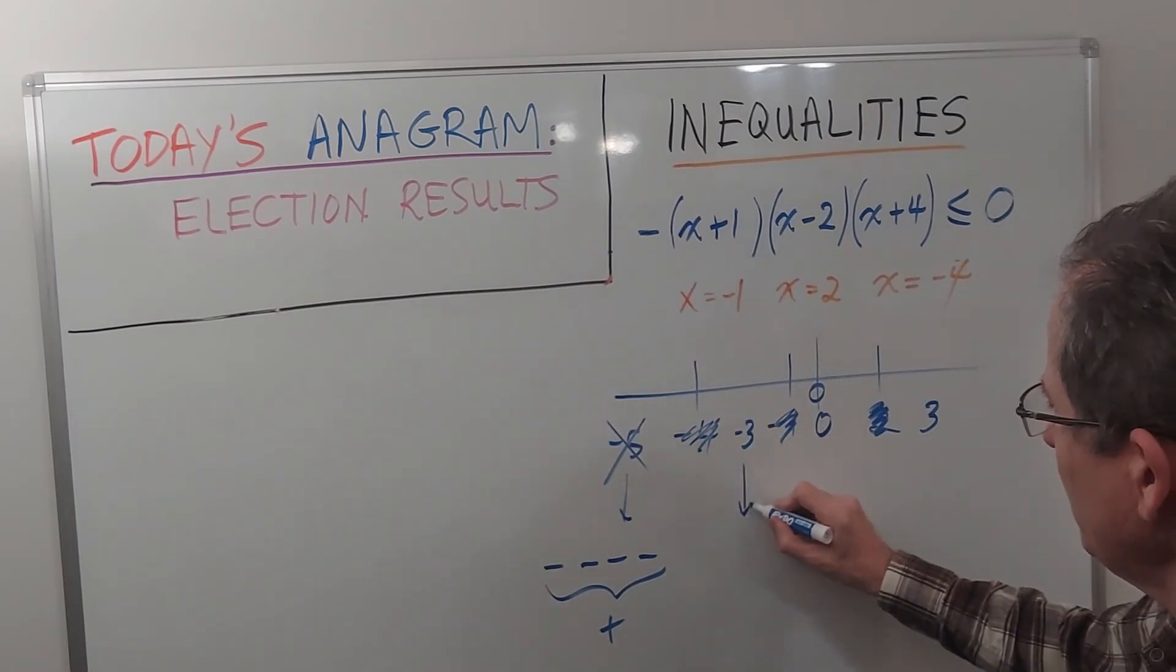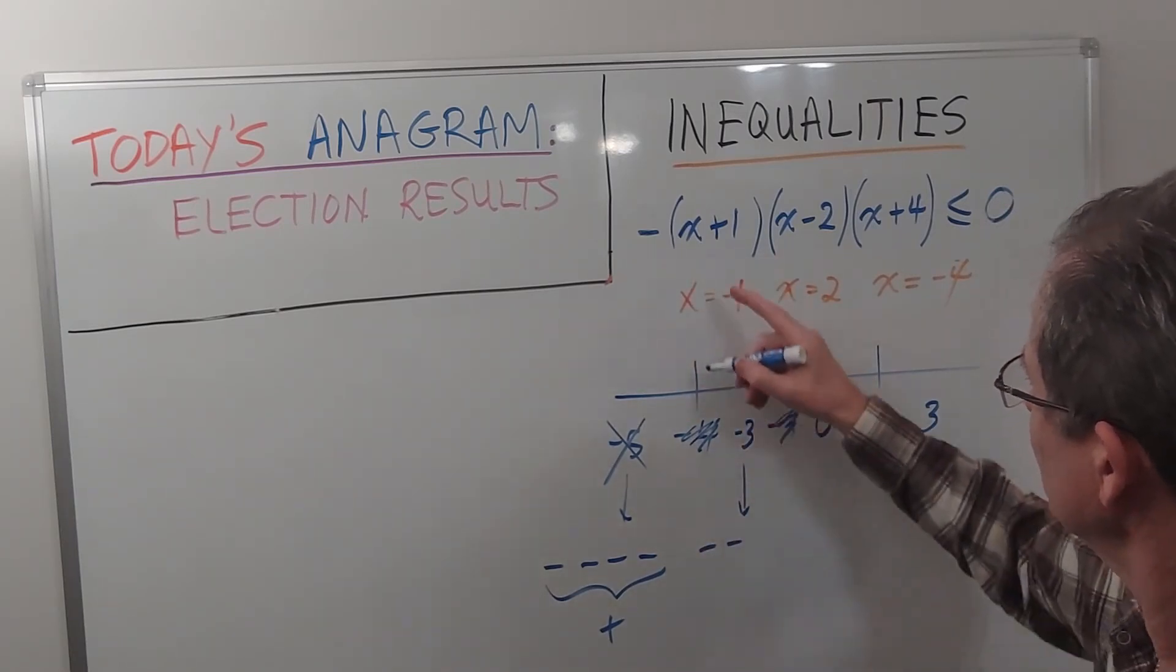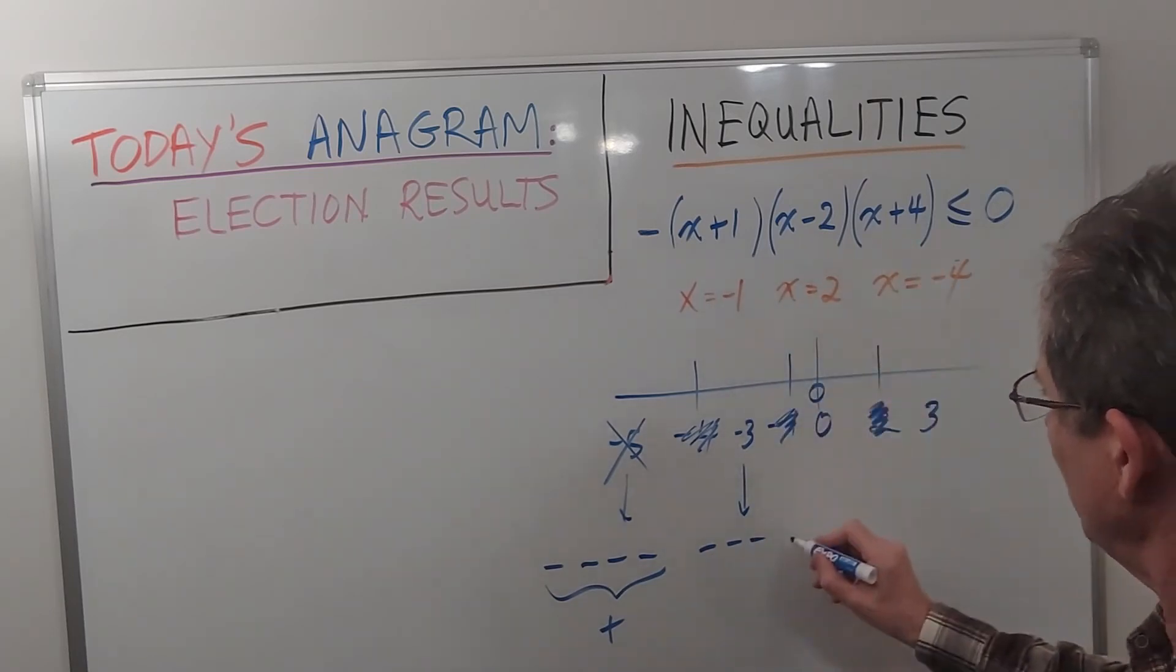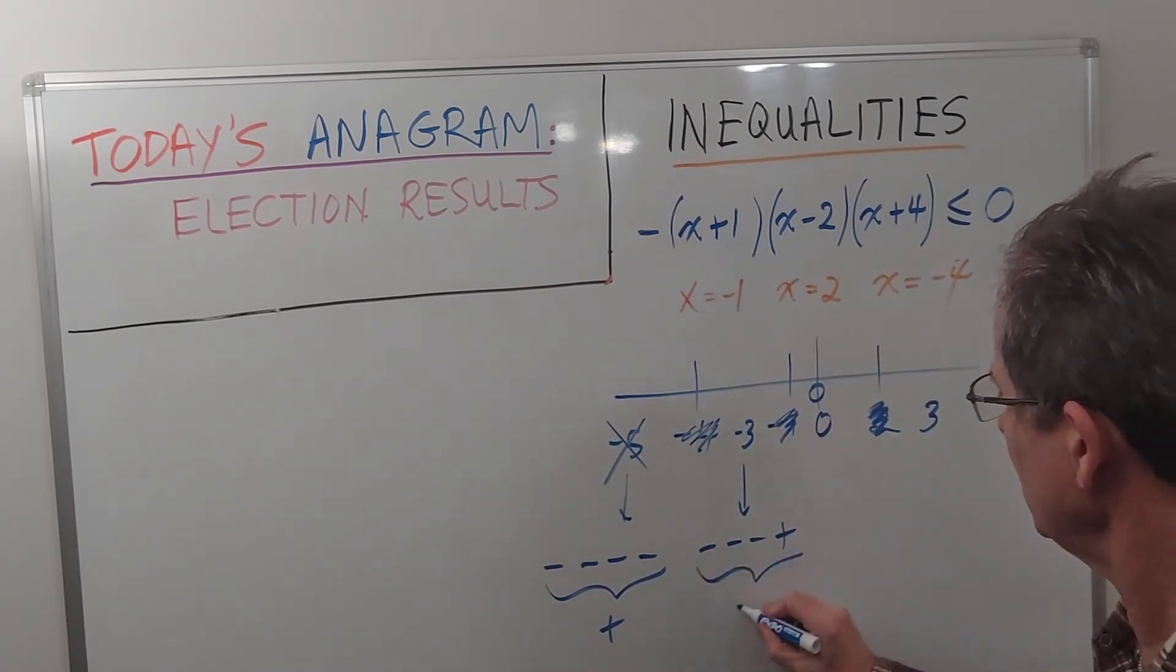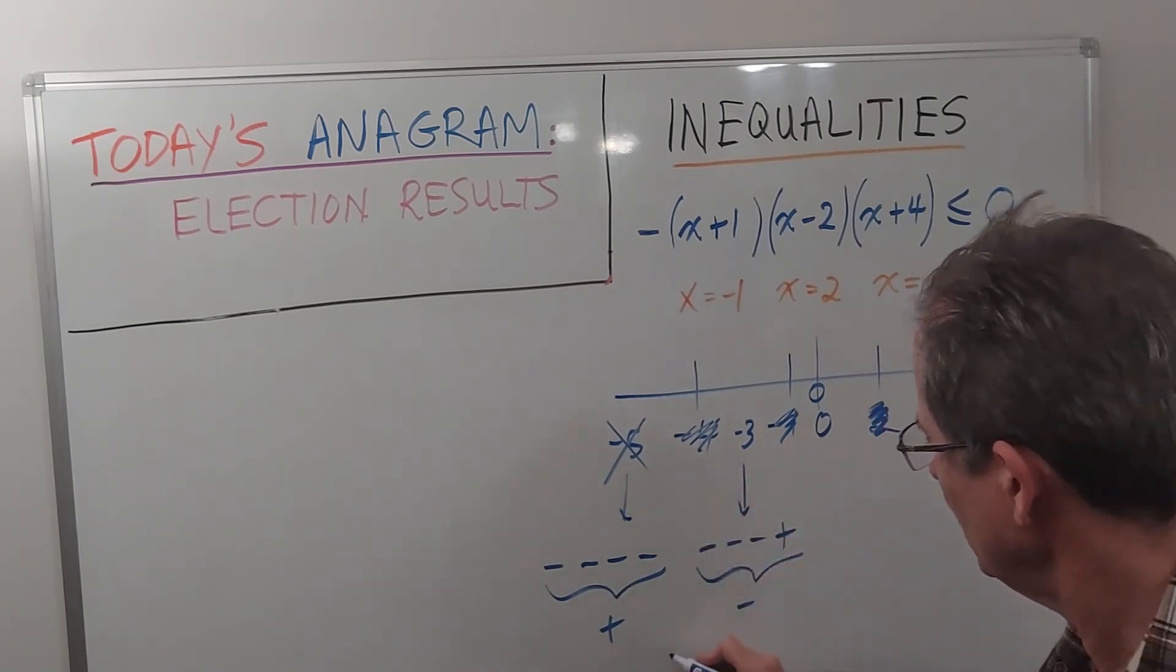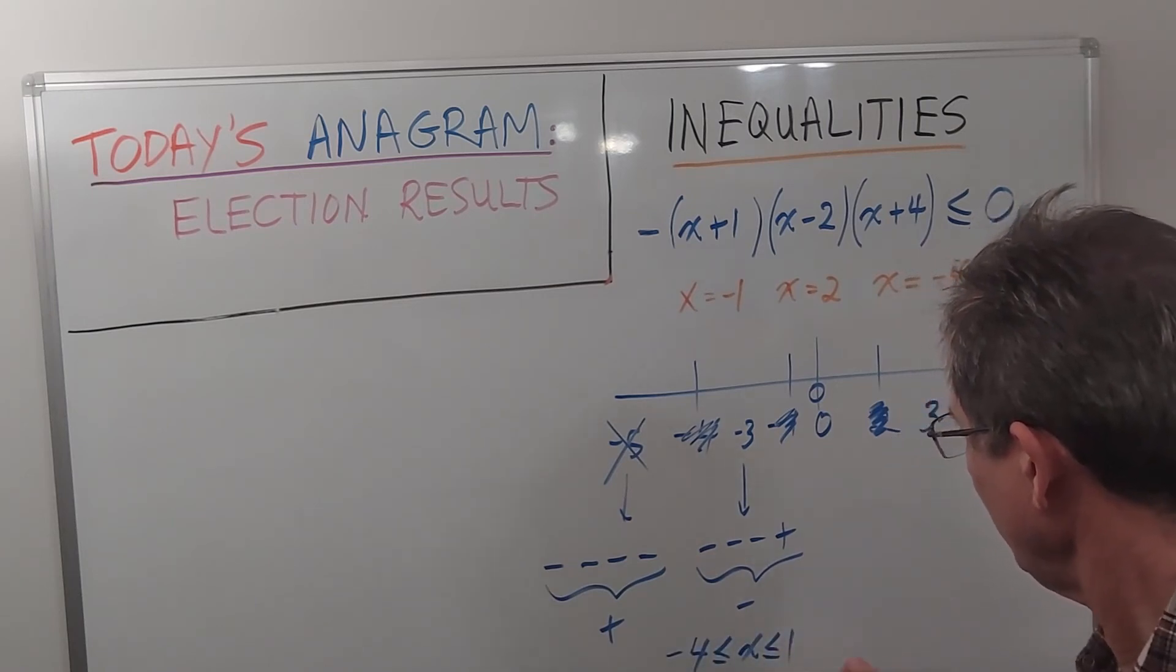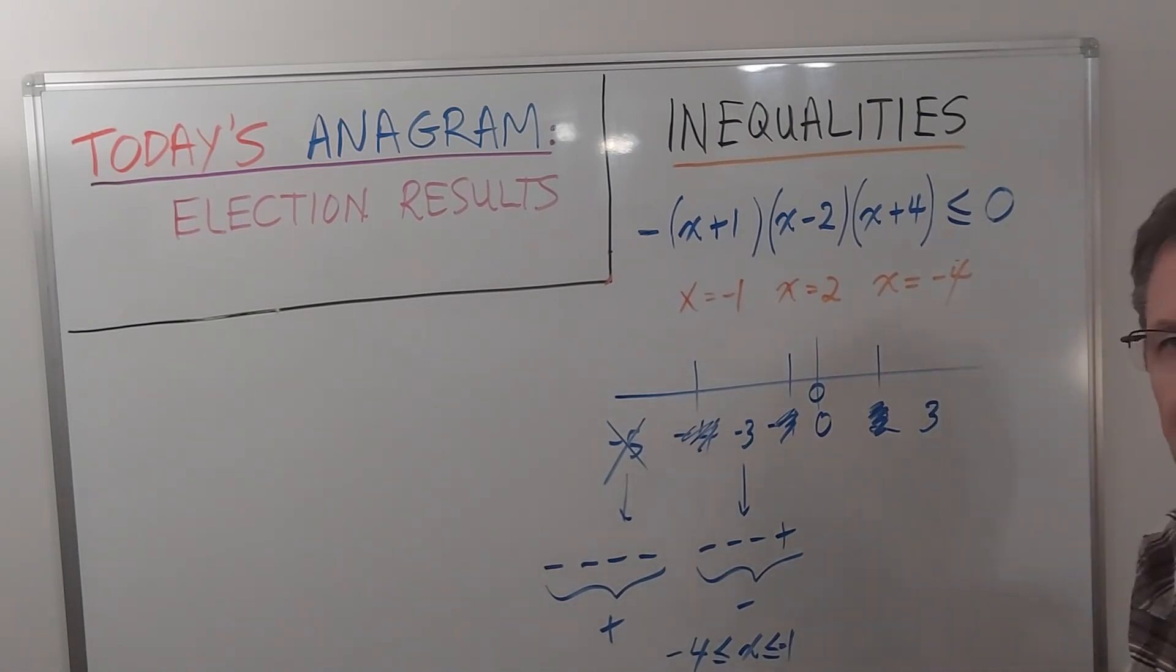Negative 3. I've got a negative in front, that would be negative, that would be negative, that would be positive. So that gives me a negative. That's what I want. So from negative 4 to negative 1, as we've said before, is part of the solution.